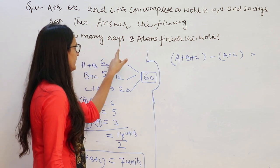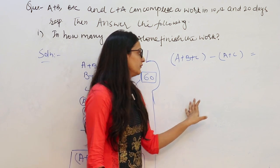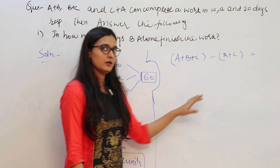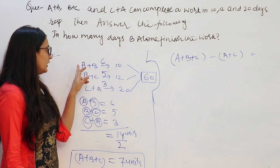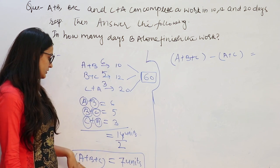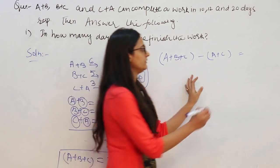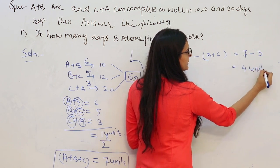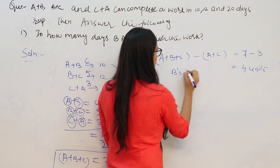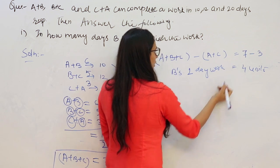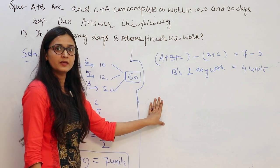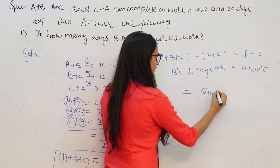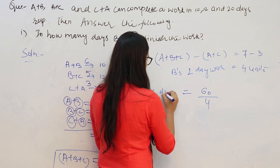Similarly, we will find the number of days in which B alone will finish the work. First find the efficiency of B by subtracting the efficiency of A+C (which is 3) from the efficiency of A+B+C (which is 7): 7 − 3 = 4 units. This is B's 1-day work. The total unit of work is 60, and B's efficiency is 4.